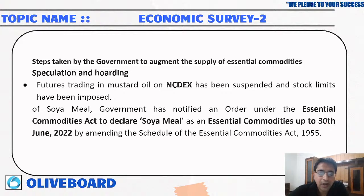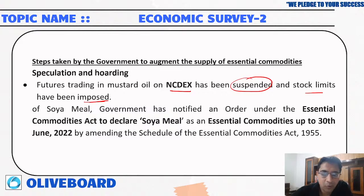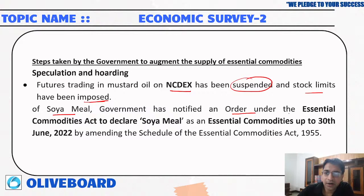To counter speculation and hoarding, futures trading in mustard oil on NCDEX has been suspended and stock limits have been imposed. Soya meal has been notified as an order under the Essential Commodity Act up to June 2022. You should remember which items have been recently added to the Essential Commodity Act.